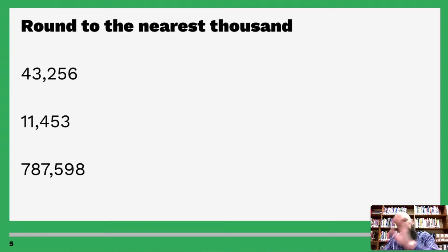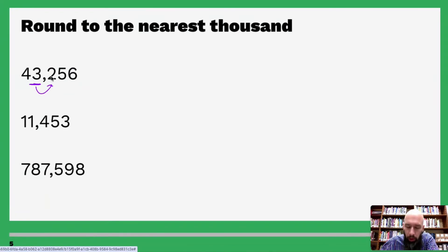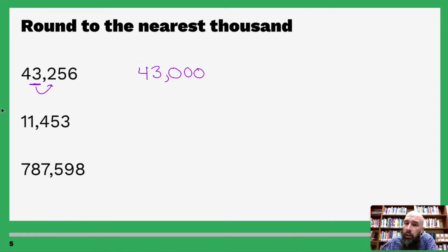Let's take a look at thousands. Round to the nearest thousand — here's ones, tens, hundreds, thousands. Look to the number to the right — four or below, let it go. So these three numbers become zeros: one, two, three. There's my comma. Four or below, let it go — we leave three as three and four comes along for the ride.